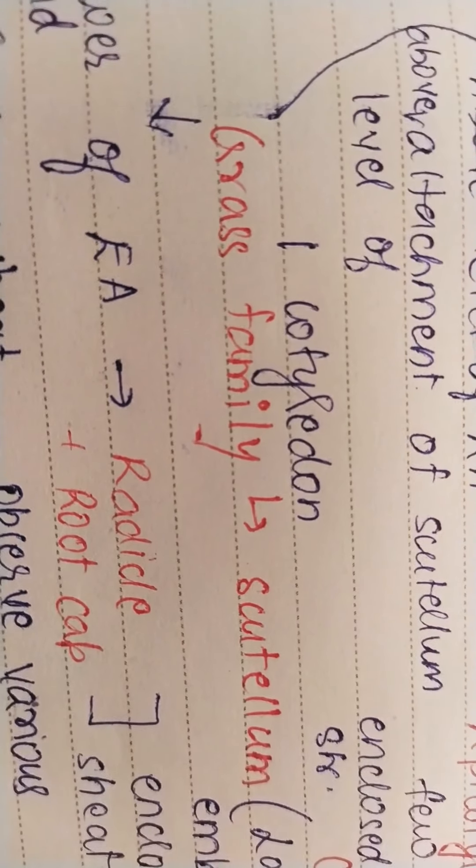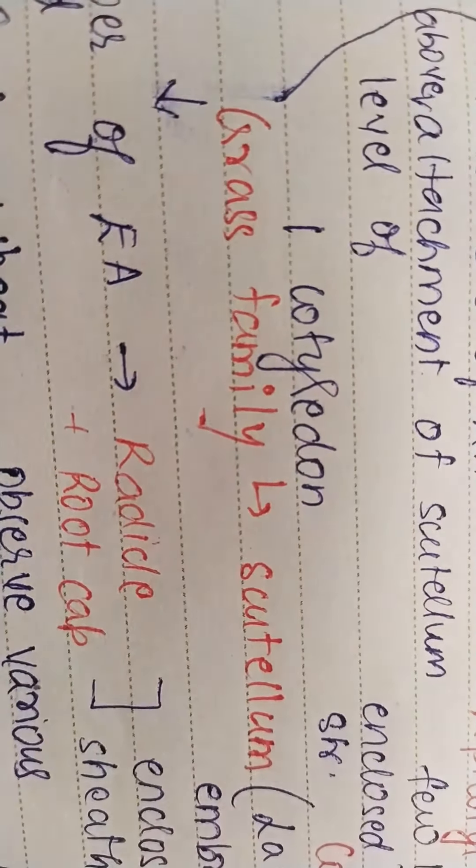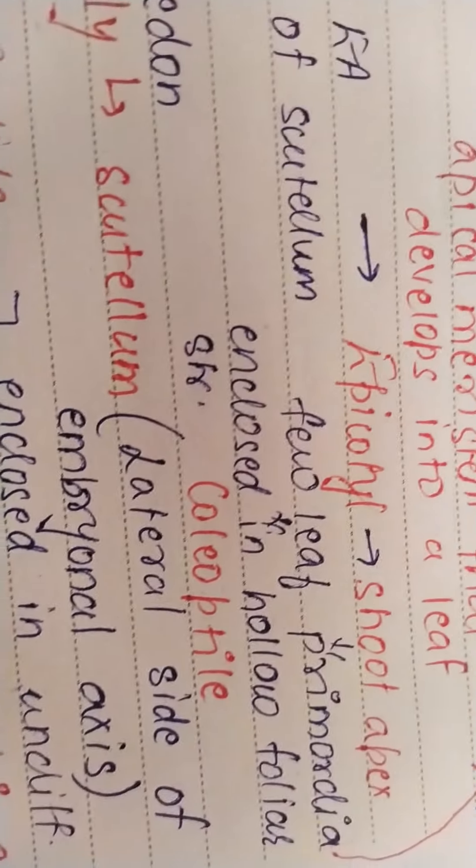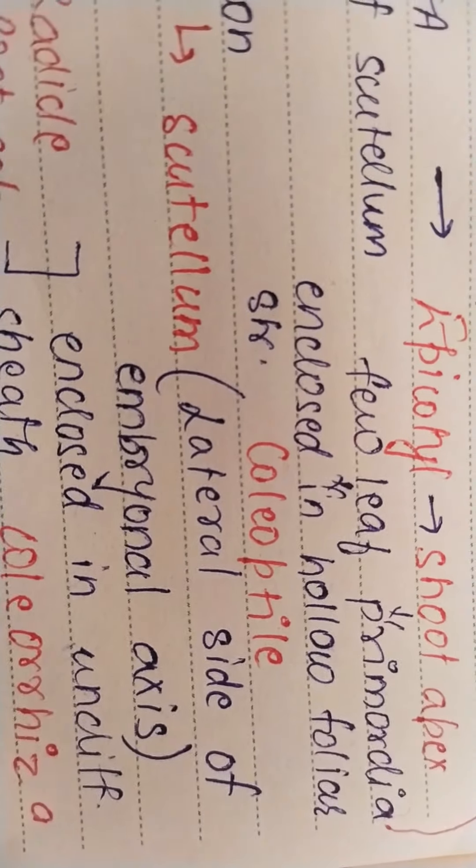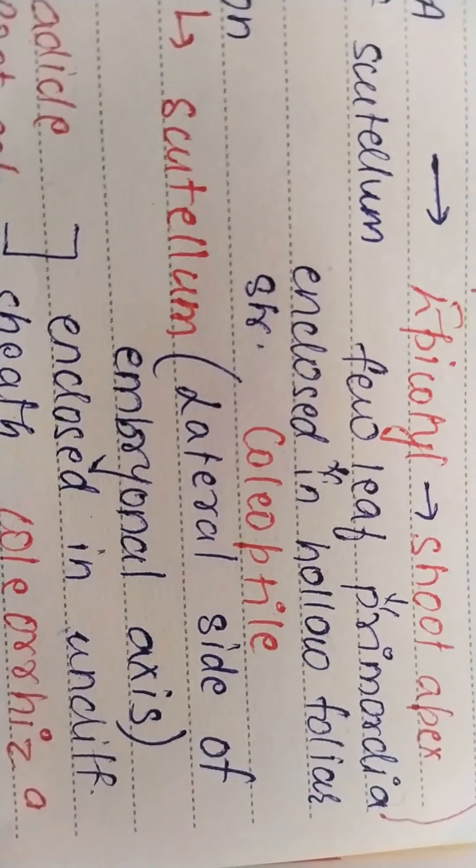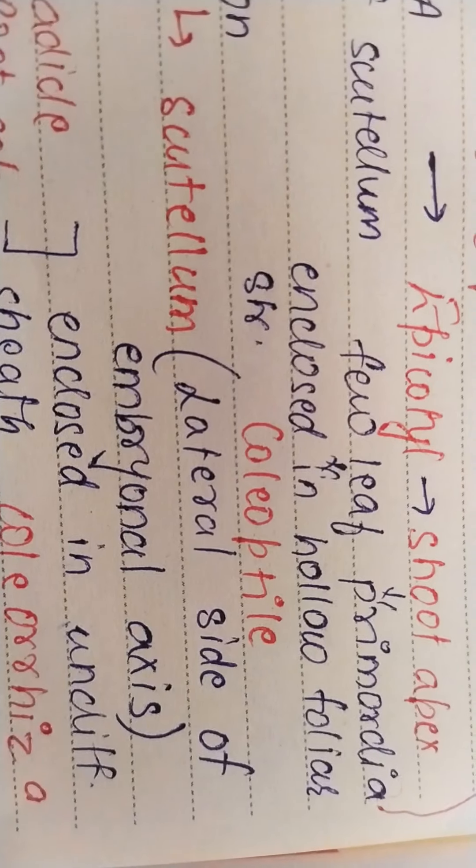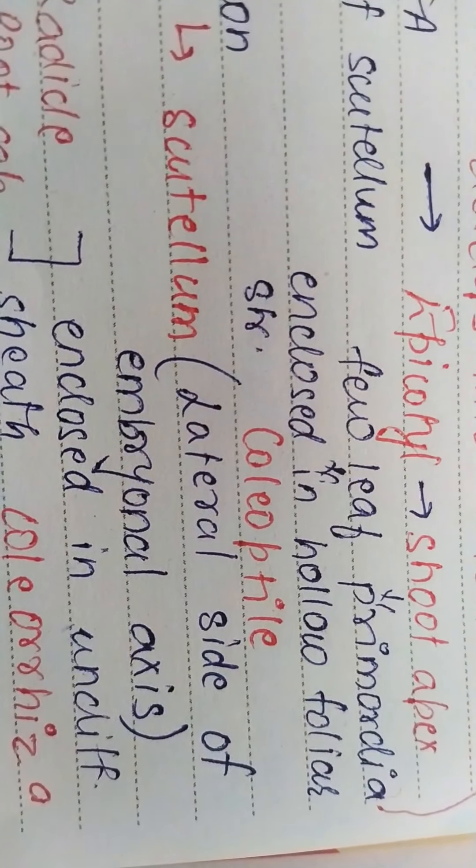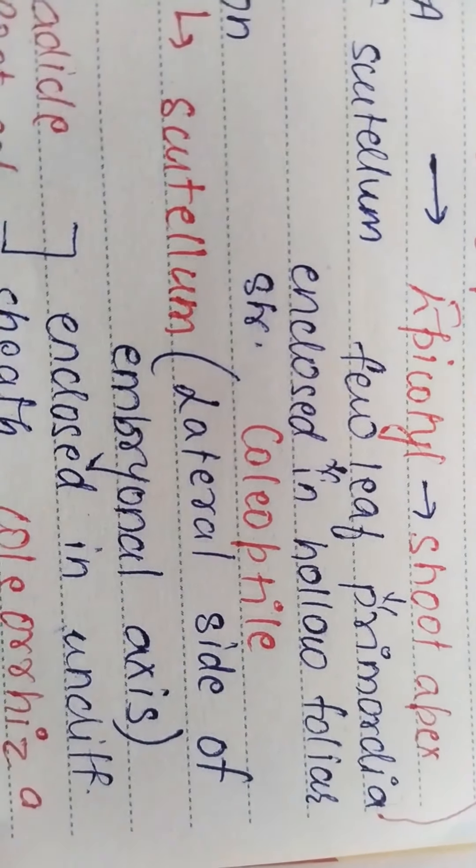Now when you go to the embryonal axis that is above the level of attachment of scutellum, you will see epicotyl which is going to form shoot apex. Now this shoot apex has few leaf primordia which are enclosed in foliar structure known as coleoptile.